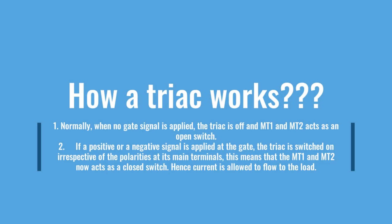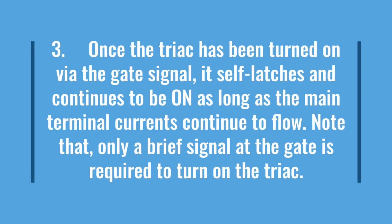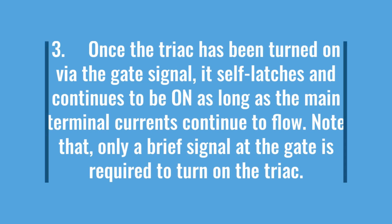This means that main terminal 1 and main terminal 2 now act as a closed switch, and current is allowed to flow to the load. Third, once the TRIAC has been turned on via the gate signal, it self-latches and continues to be on as long as the main terminal currents continue to flow. Note that only a brief signal at the gate is required to turn on the TRIAC.